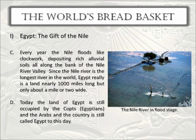The Nile floods every year in such a predictable way that the river itself was worshipped as a life-sustaining god. The pharaoh, or king of Egypt, was also worshipped as a god because he was believed to be instrumental in making the Nile flood every year. Because the river was so consistent, it made it easy for the pharaoh to claim that it was because of his power that the river was flooding and the land was producing such a bountiful harvest.